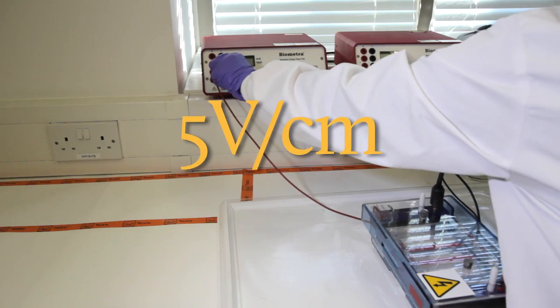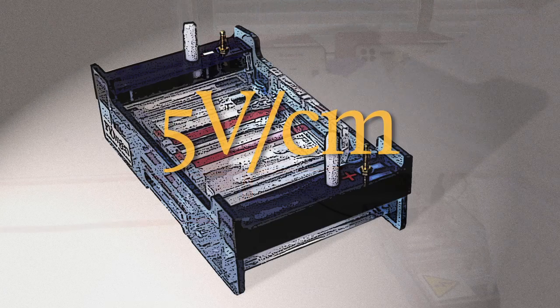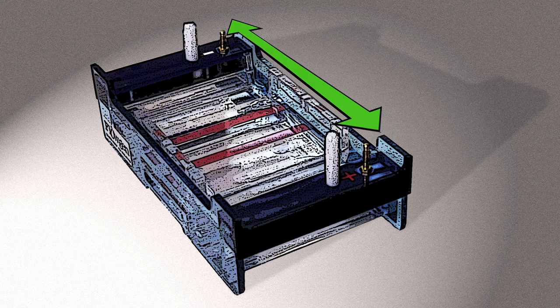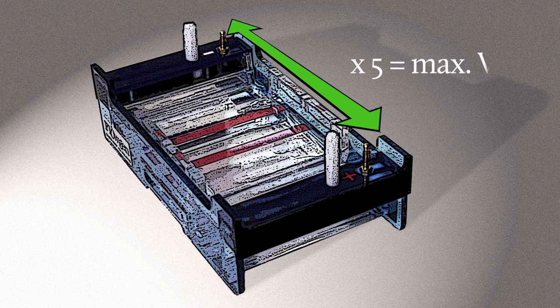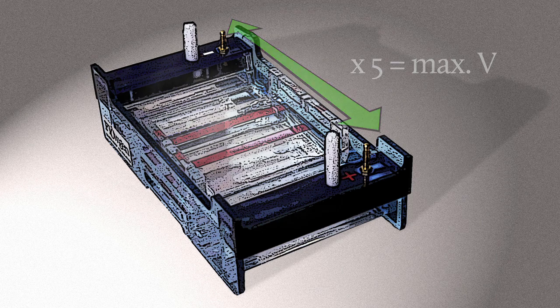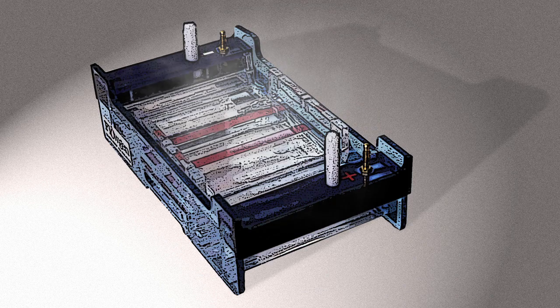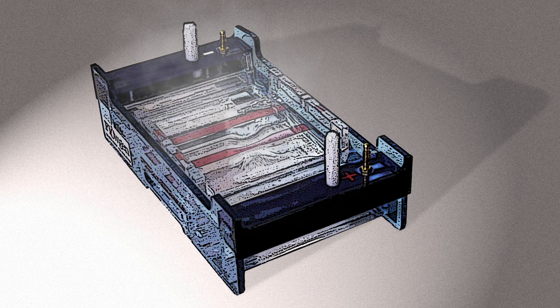Gels should not be run faster than 5 volts per centimeter. If you take the distance between the electrodes in centimeters, and multiply by 5, this is the maximum voltage. If gels run too fast, they will heat up and could melt. Hotter running gels won't resolve as well.